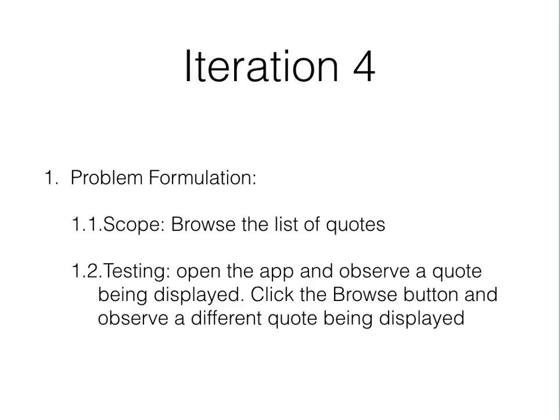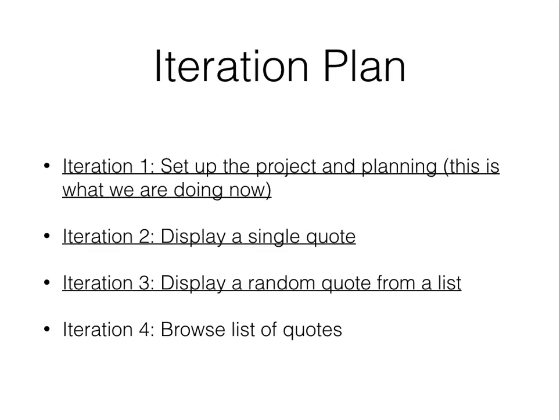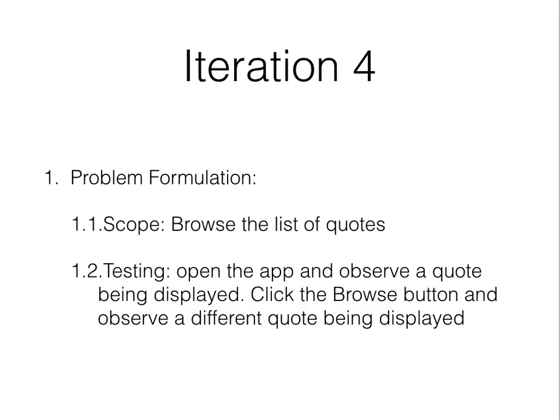How are we going to test this? The testing scenarios are: I open the app and observe that there is a quote, then browse through the app by clicking the browse button and observe that different quotes are being displayed. Notice that by the end of this iteration the full app will be completed, so the testing scenarios may be very similar to those defined for the entire app in iteration one.